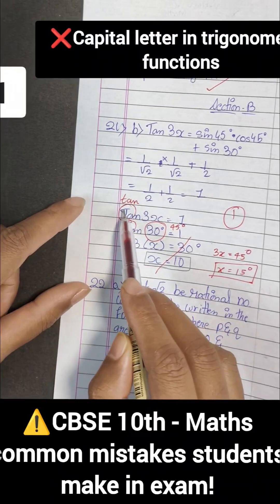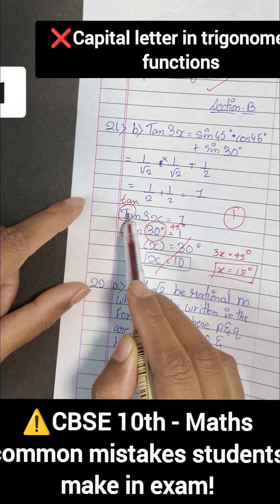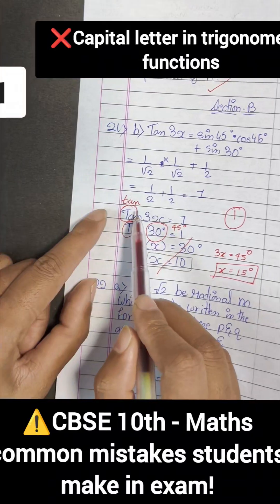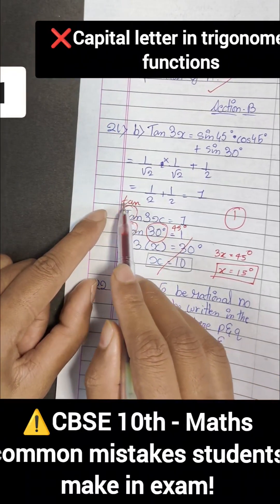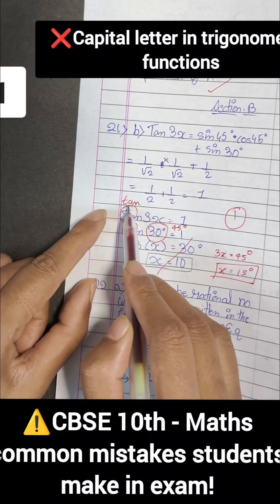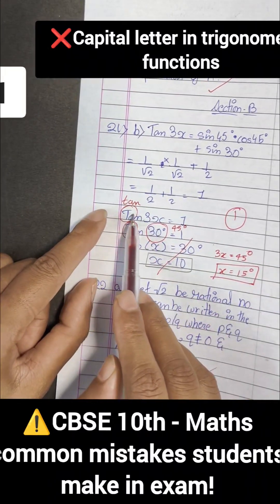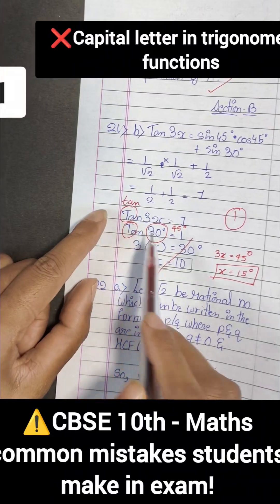The first common mistake is they usually write the trigonometric function starting with a capital letter. Trigonometric functions are standard mathematical functions, so there is a standard way of writing them. All of them start with small letters, so we are not supposed to use capital letters over here.